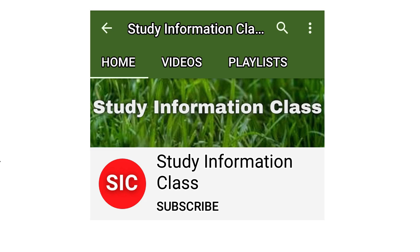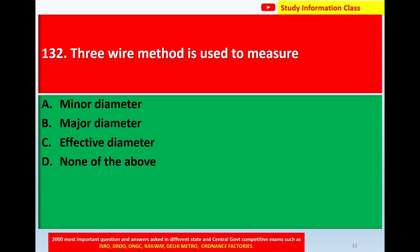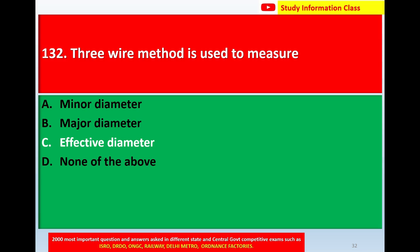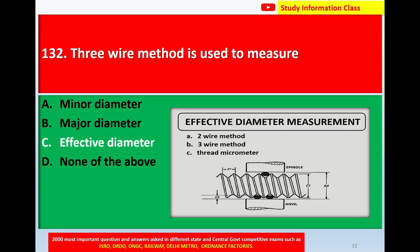Question number 132: The three-wire method is used to measure — option A minor diameter, option B major diameter, option C effective diameter, option D none of the above. The correct answer is option C: effective diameter.